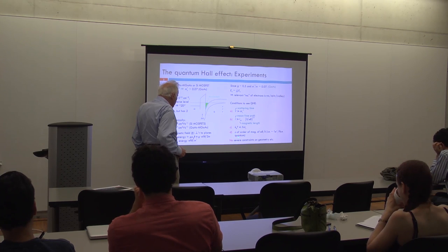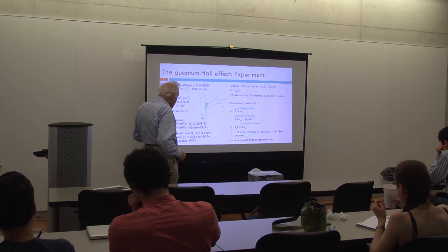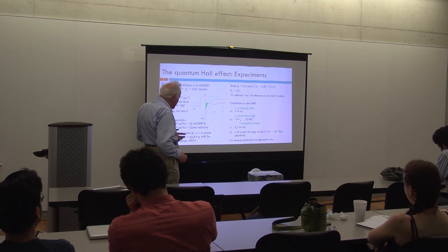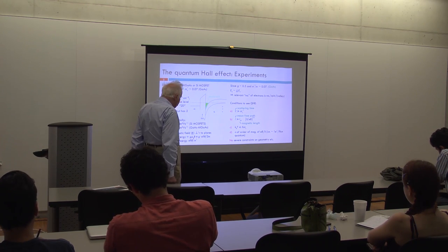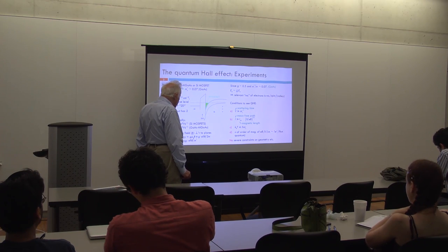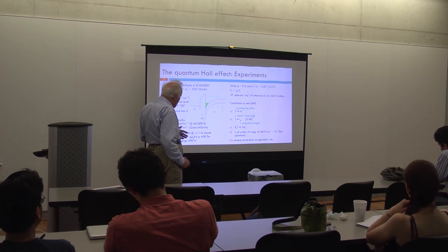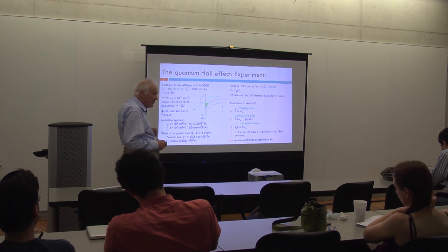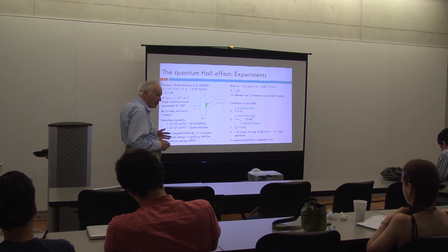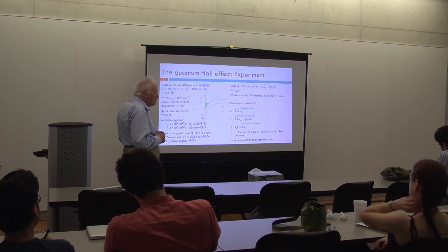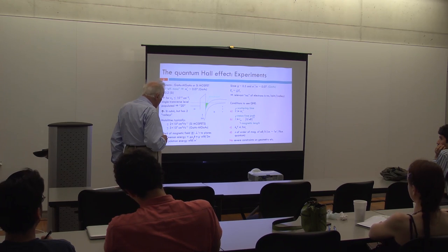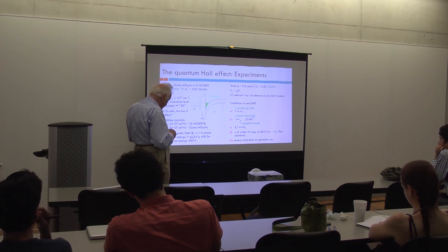Finally, the aerial density of electrons should be of order eB/ℏ — basically one electron per flux quantum. The interesting point about the quantum Hall effect, appreciated from the earliest days, is that although you have all these constraints, one constraint you don't have is any severe constraint on the geometry. You can have a really rather messy sample from the point of view of its edges and you'll still be able to see the quantum Hall effect. That's a telling observation.